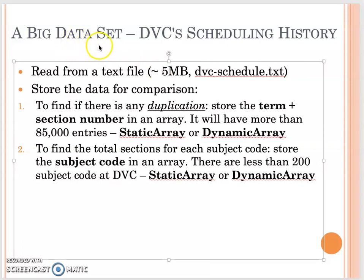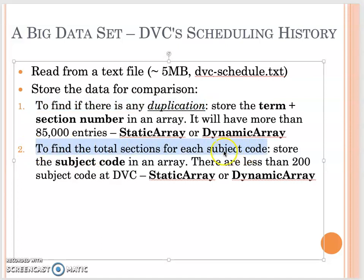In our big data application, we have two tasks to work on in assignment 5. The first one: you need to find out how many duplications exist in this text file. The second task: you need to find the total sections for each subject code — for example, from year 2000 until 2020 spring, how many computer science courses we offered, meaning how many sections. You also need to display all subject codes with their total sections from year 2000 in alphabetical order.